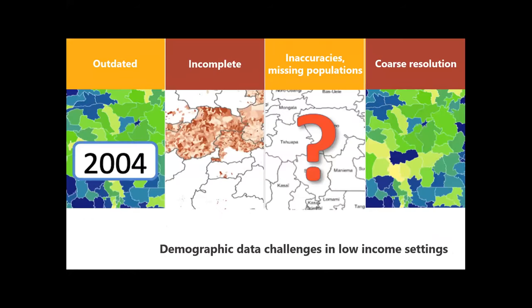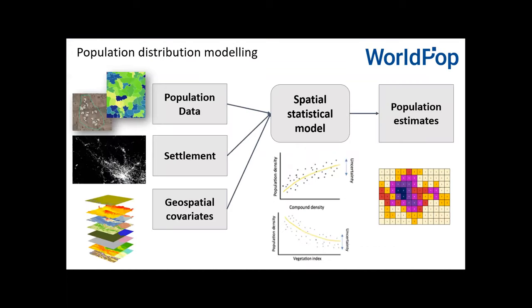We are often faced with population data that is outdated, incomplete, sometimes missing people, and often only available at coarse tribal or administrative levels. This is what we work on within WorldPop — producing what Bjorn described as raster or gridded population estimates.